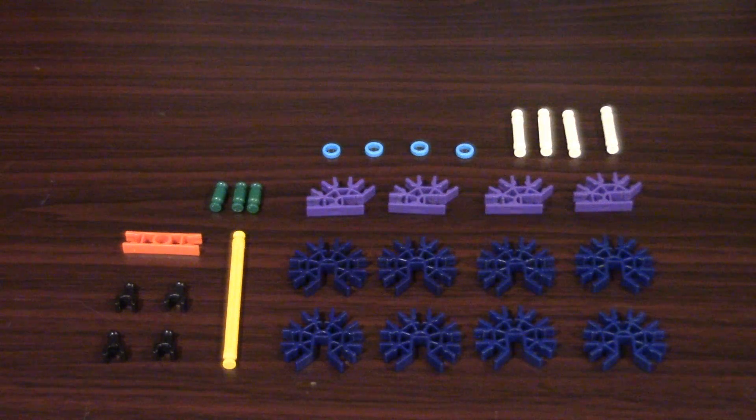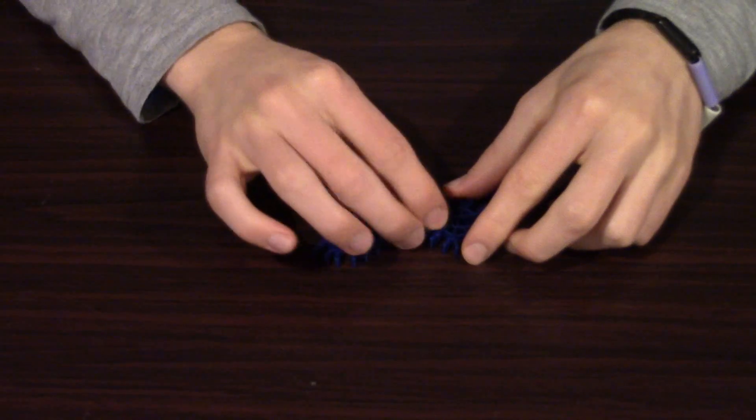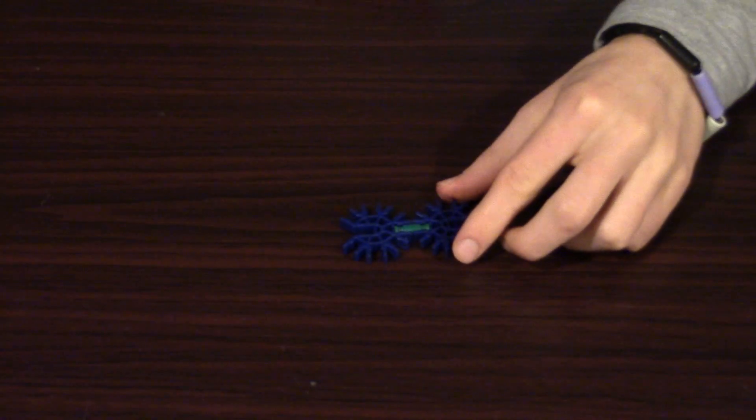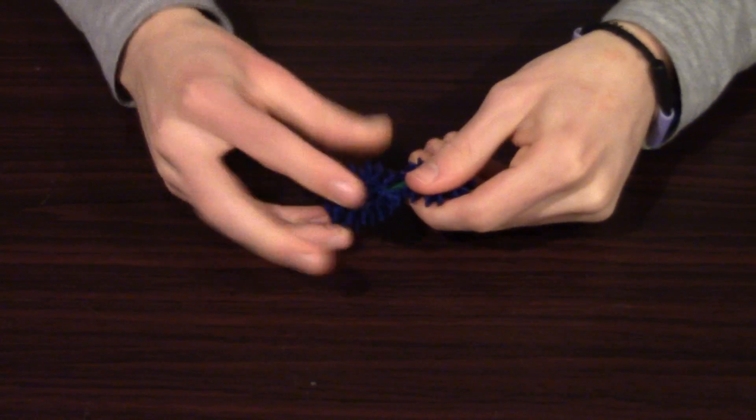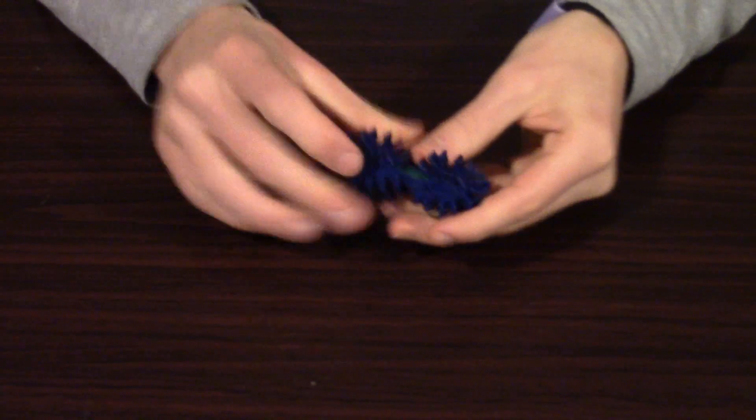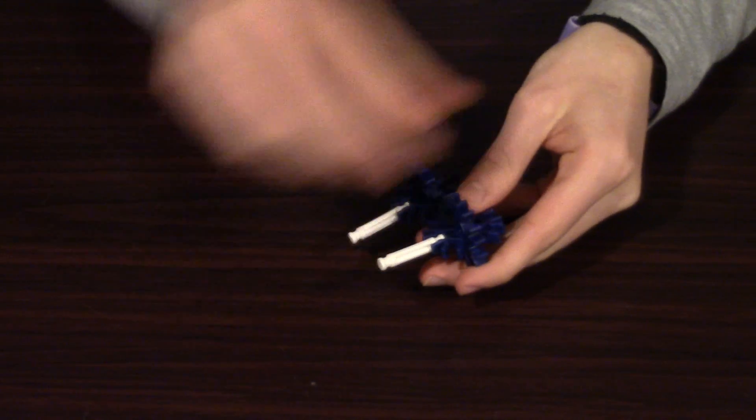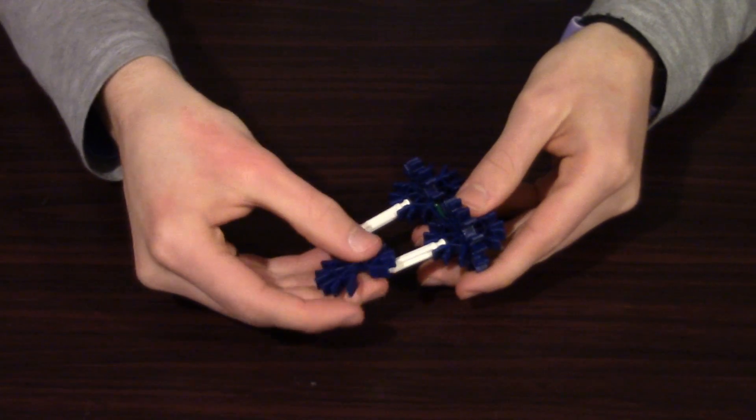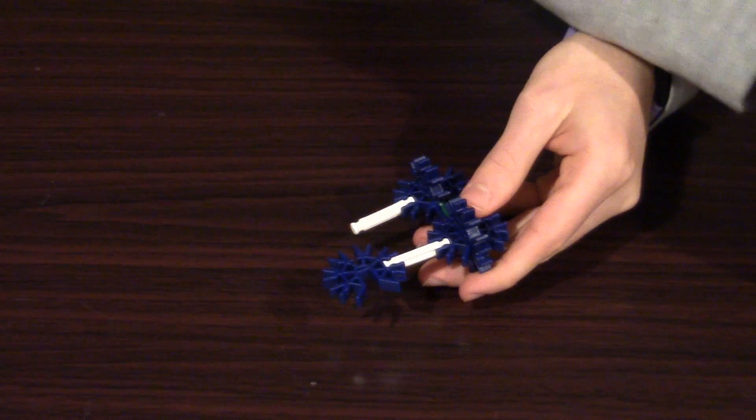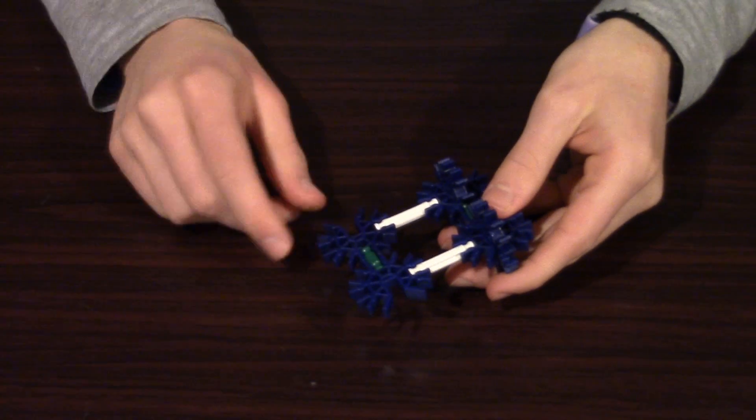These are the pieces you'll need for this section if you want to go ahead and collect them ahead of time. So the first thing you're going to do is take two of these blue pieces and put a green rod in the middle of them, connecting them like this. And you're going to take two more, put them in on each side. And then take two white rods, stick them coming out this way. Then you're going to take another blue one and place it with the slot facing outwards. Do the same thing on the other side.